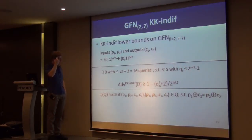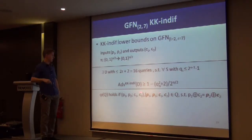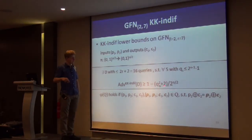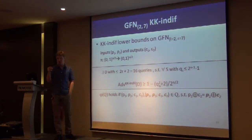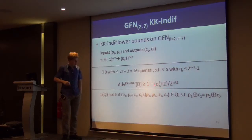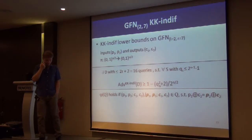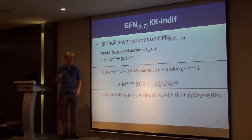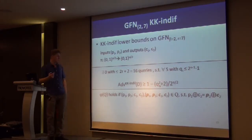Here we have a concrete statement: the advantage of the non-key indifferentiability distinguisher is at least one minus a certain value, where Q_ES is the number of queries the simulator makes to the ideal cipher — the big oracle in the right world. It's always important to include the number of queries for the simulator, because if you allow this number to be high, you don't necessarily get informative statements. Importantly, the number of queries the simulator makes can actually be very small.